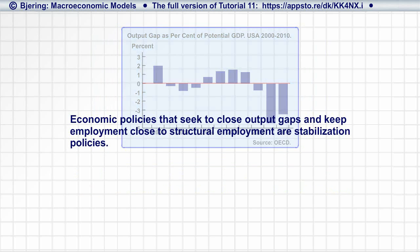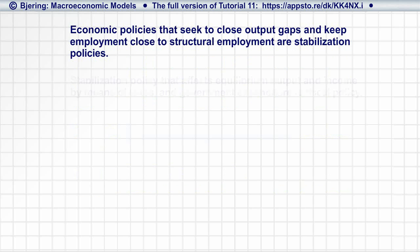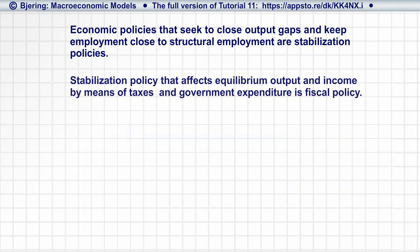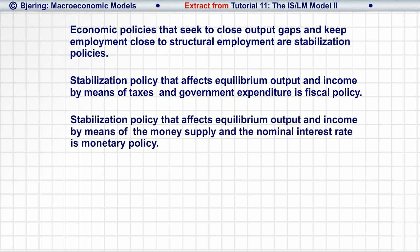Recall, the stabilization policy that affects output and income by means of taxes and government expenditure is fiscal policy, while monetary policy affects income and output by means of the money supply and the nominal interest rate.